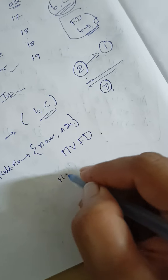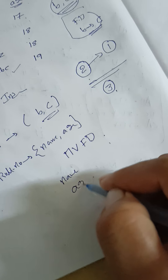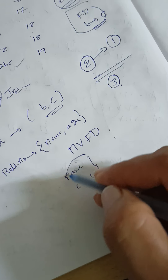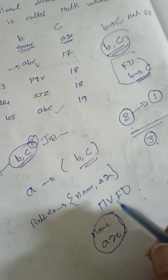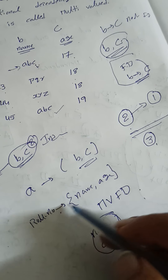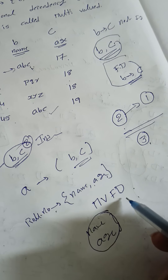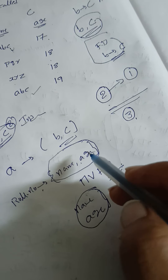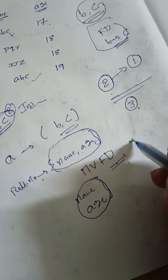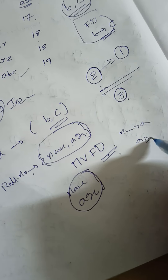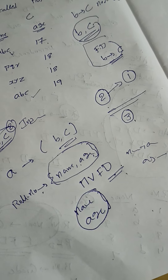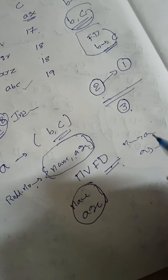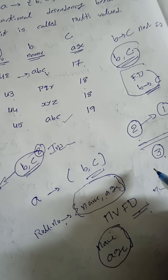Since name and age are not dependent on each other, roll number implying name and age is a multivalued functional dependency. On the right side, we can't say name implies age or age implies name. That's why this is the multivalued functional dependency.